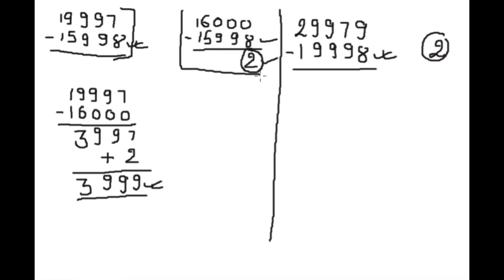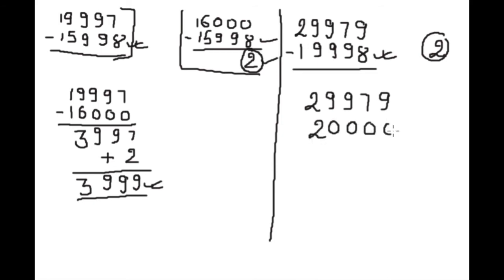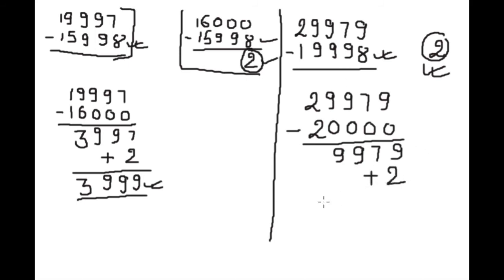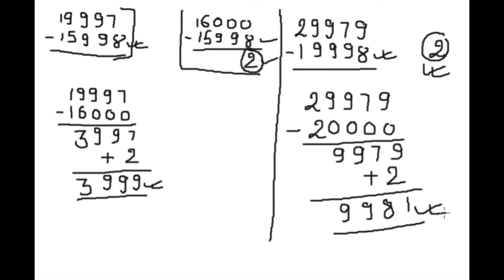It is very simple to subtract from the nearest whole number. First we subtract from twenty thousand, then because twenty thousand is two extra from nineteen thousand nine hundred ninety-eight, we add two back. This gives us the answer to this equation.